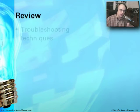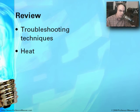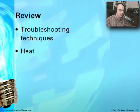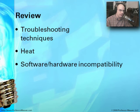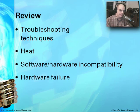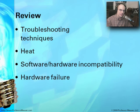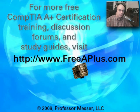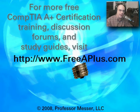In review, that's our troubleshooting process: look at how you're troubleshooting the system, maybe use POST cards to understand what's happening with the motherboard, ensure proper cooling and thermal protection to minimize heat, and upgrade the BIOS to eliminate incompatibilities between the motherboard and your software. For hardware failures, you can either work around them or, when the motherboard itself is the problem, sometimes you have to swap out the entire motherboard. For more A-Plus videos, study guides, and message boards, visit freeaplus.com.